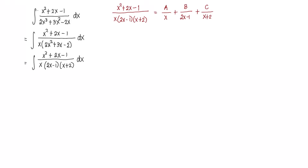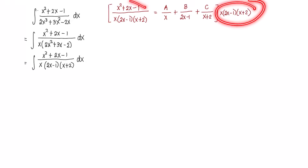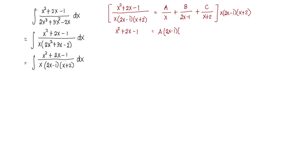We eliminate the fractions by multiplying the entire equation by the denominator. This cancels the denominator completely, leaving x squared plus 2x minus 1 on the left side. For A, we cancel x, leaving A times 2x minus 1 times x plus 2. For B, we cancel 2x minus 1, leaving B times x times x plus 2. For C, we cancel x plus 2, leaving C times x times 2x minus 1.